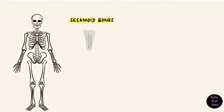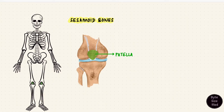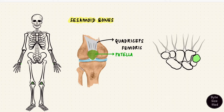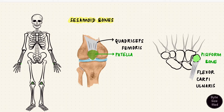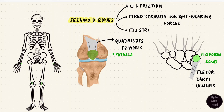Sesamoid bones are like little nodules; they form in tendons and ligaments and can vary from person to person. The classic sesamoid bone is the kneecap — the patella — which forms in the tendon of the quadriceps femoris muscle of the thigh. Another example is the pisiform bone in the wrist, which forms in the tendon of the flexor carpi ulnaris. Sesamoid bones can reduce friction, redistribute weight-bearing forces, and reduce stress on the tendon.